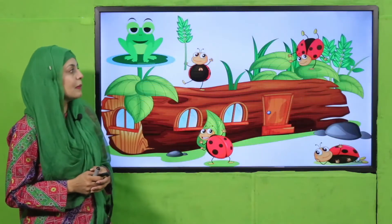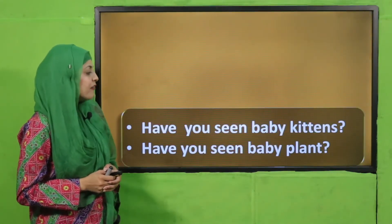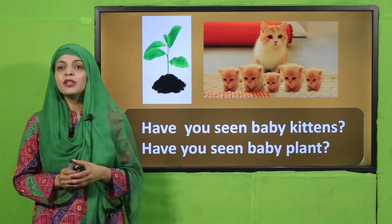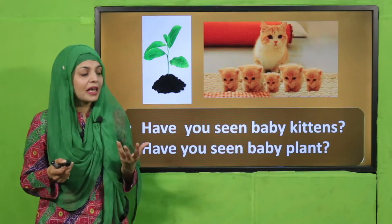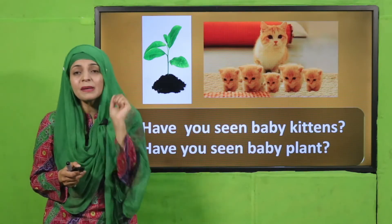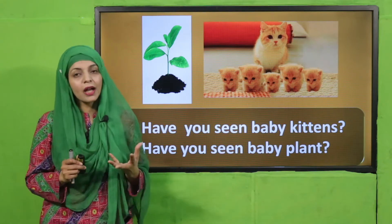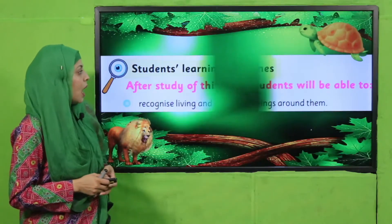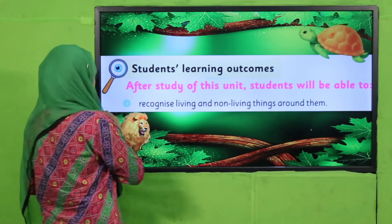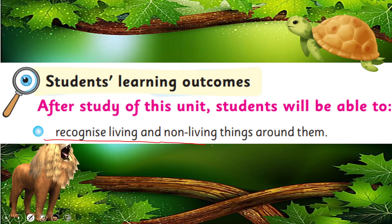Now let's quickly move forward towards the ice breaking activity. Have you seen baby kittens? Kya aapne kabhi chote chote billi ke bachon ko dekha hai? They grow into big cats. So have you seen a baby plant? They grow into bigger plants. So that means all living things grow. Now let's quickly look at today's student learning outcome: students will be able to recognize living and non-living things around them and explain why some things are living and some are non-living.